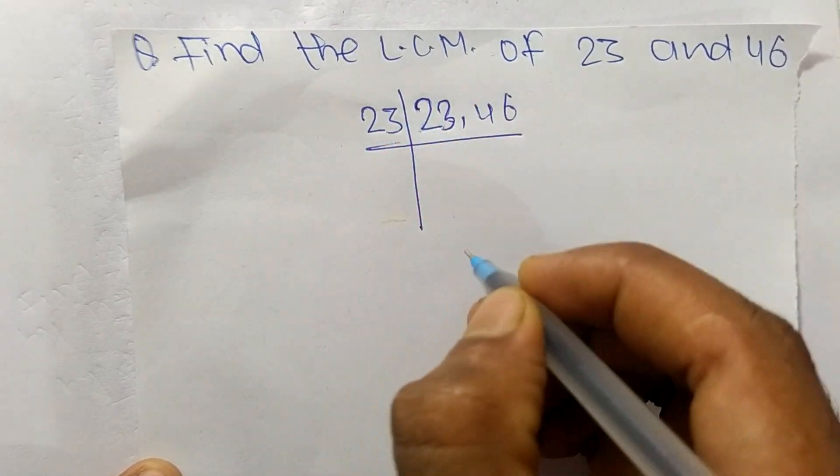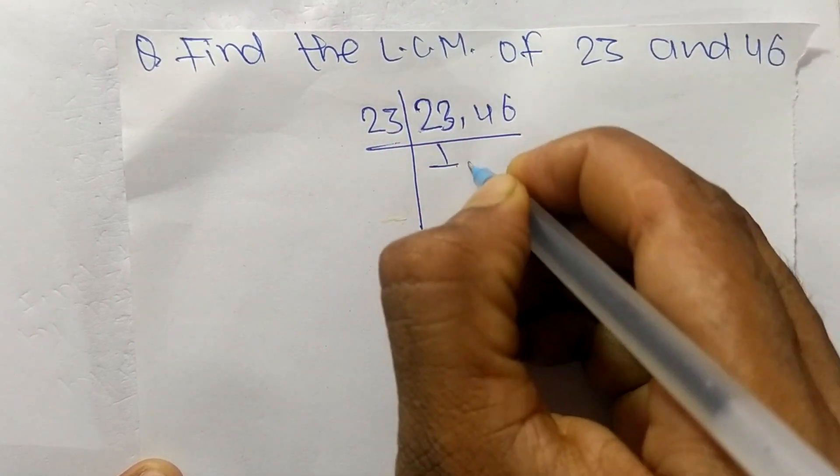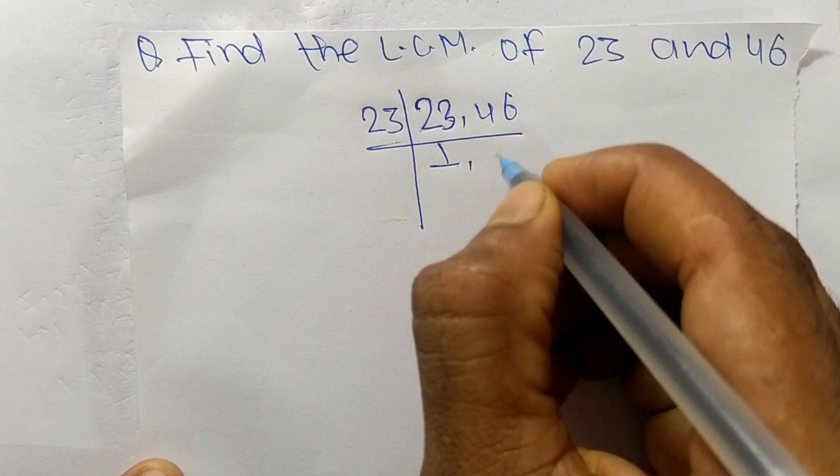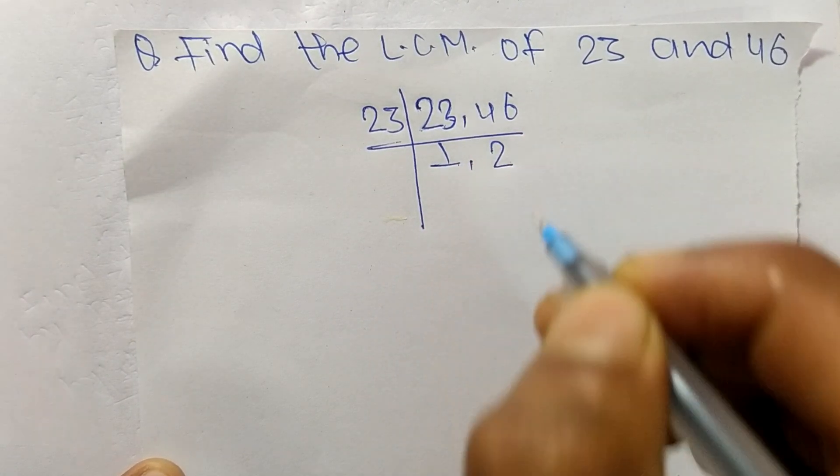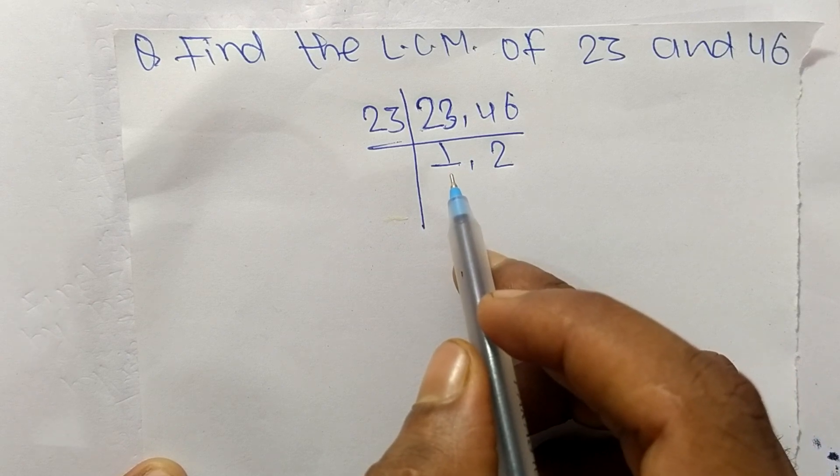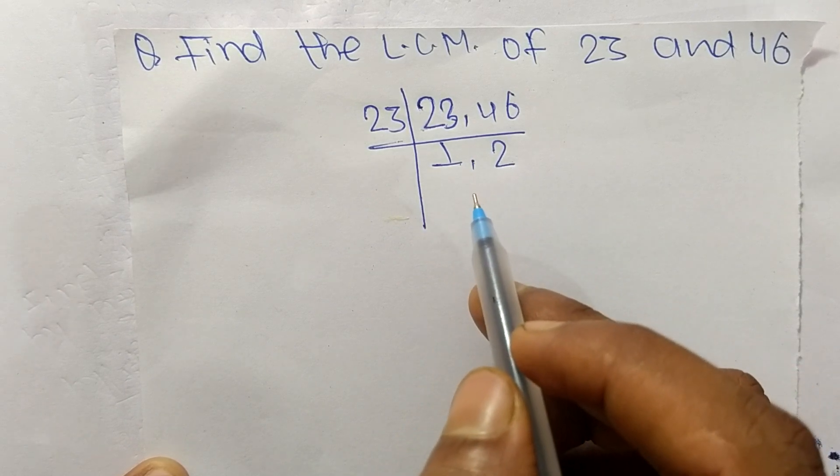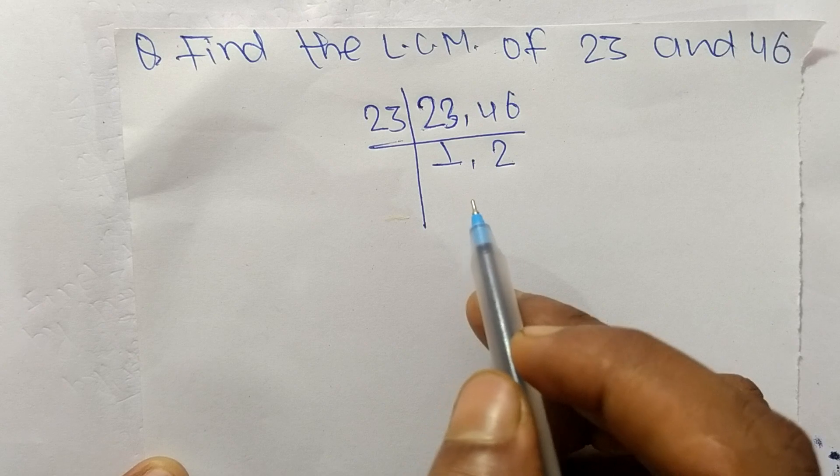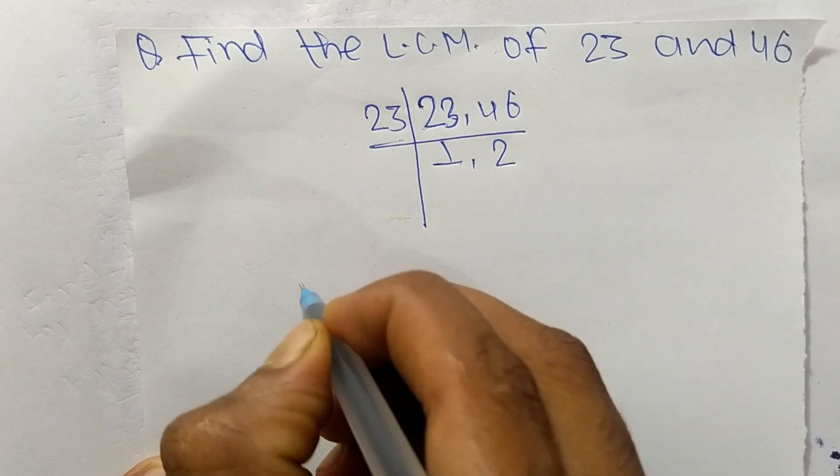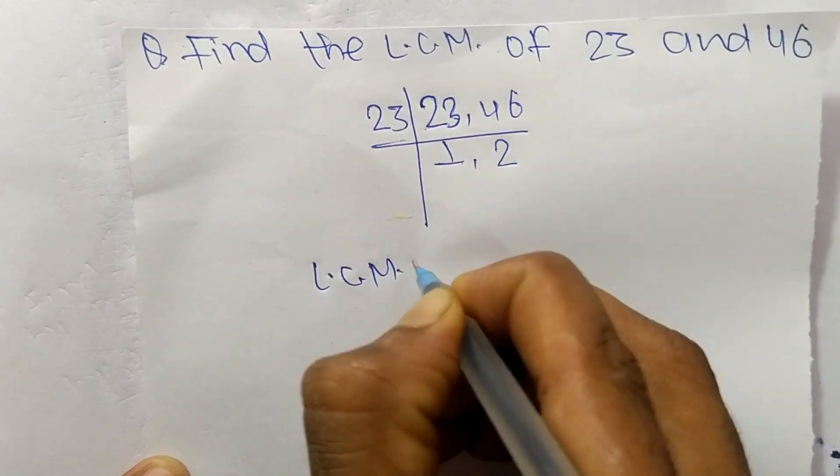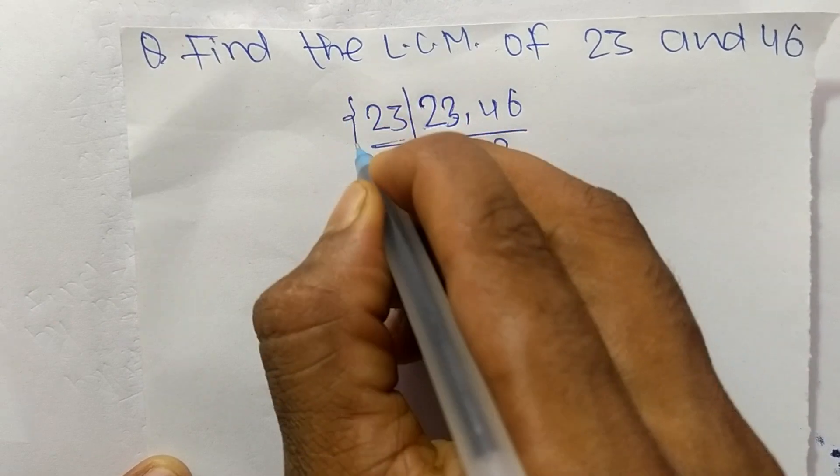23. So 23 times 1 means 23, and 23 times 2 means it is 46. So we have here numbers 1 and 2 which are not exactly divisible by any other numbers. So the LCM is equal to, from this